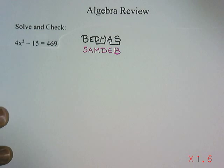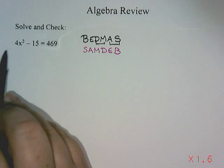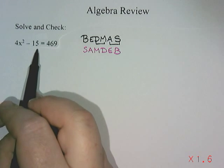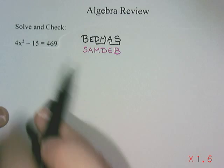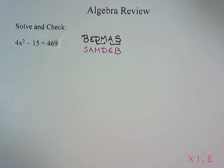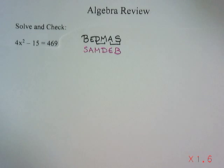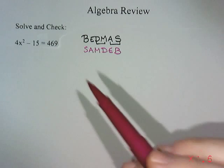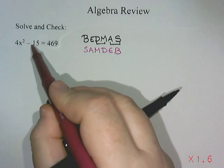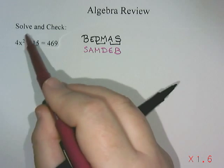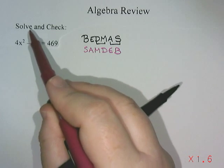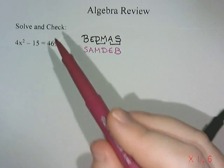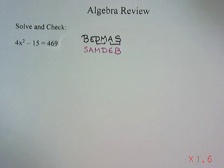So with the equation 4x squared take away 15 equals 469, I want to isolate that x squared by canceling out all the operations — the take away 15, the multiply by 4, and the power of 2 — using the opposite operation.